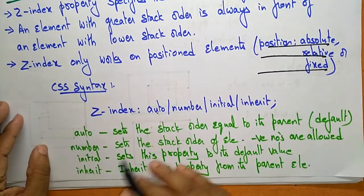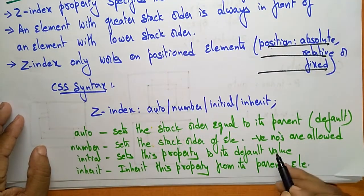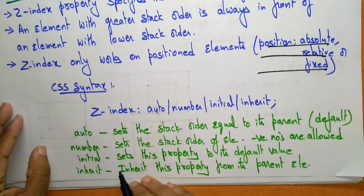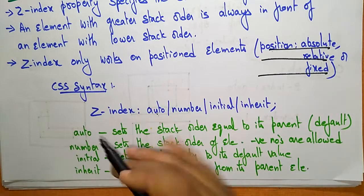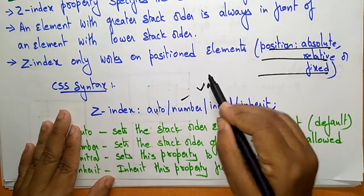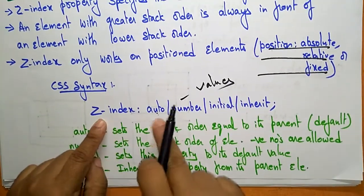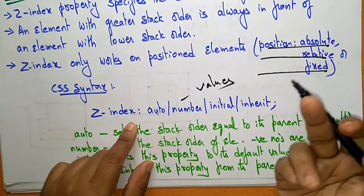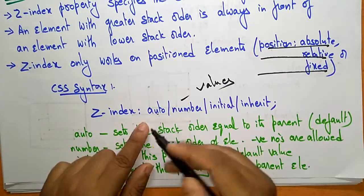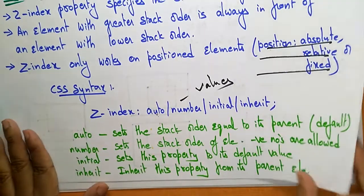Next is 'initial', which sets the property to its default value, and 'inherit', which inherits the property from its parent element. So these are all the values for the Z-index property. Based on your requirement, you can take auto, number, initial, or inherit values.